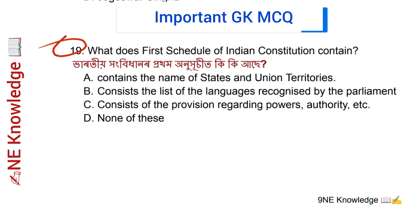Question number 19: What does the First Schedule of the Indian Constitution contain? The First Schedule contains the names of the states and union territories.